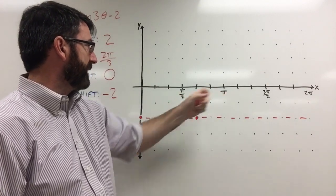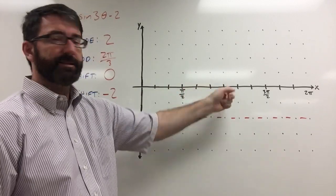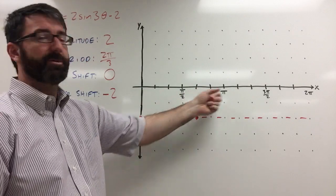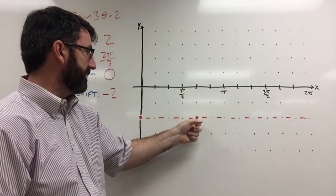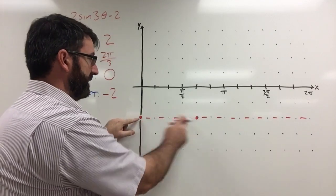So we've got 1, 2, 3, 4, 5, 6 little hash marks out to the pi. So 2 thirds of that would be 4 hash marks. So that's where I found that. So that's one period from here to here.